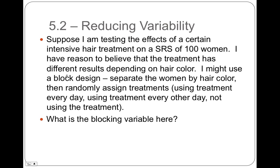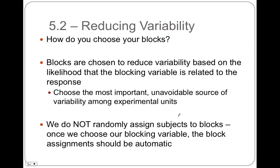In this example, the blocking variable is hair color. You choose your blocks to reduce variability based on the likelihood that the blocking variable is related to the response. In that last example, hair color was expected to affect response to the treatment. You choose the most important, most unavoidable source of variability among the experimental units.